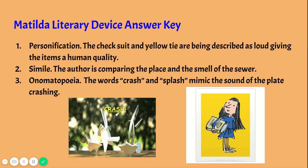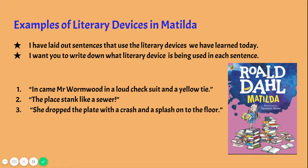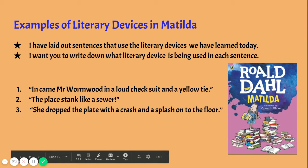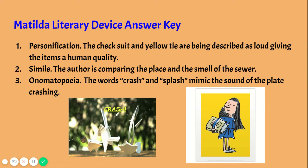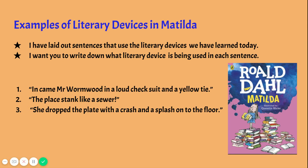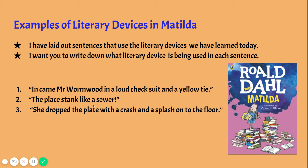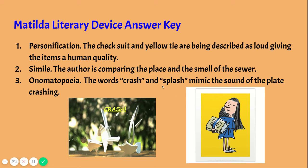Now let's go over the answers. The first sentence — 'Mr. Wormwood in a loud check suit in a yellow tie' — the answer is personification, because the check suit and yellow tie are being described as loud, which gives them a human quality. The second sentence — 'The place stank like a sewer' — uses a simile, because the author is comparing the place to a stinky sewer while using 'like' to connect those two things. The last sentence — 'She dropped the plate with a crash and a splash onto the floor' — is onomatopoeia, because the words 'crash' and 'splash' are mimicking the sound of the plate crashing.